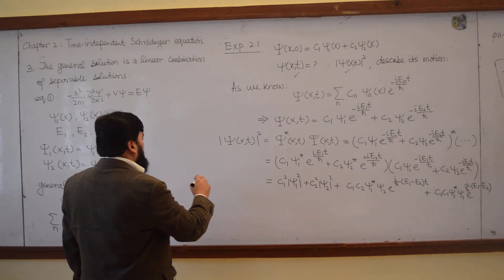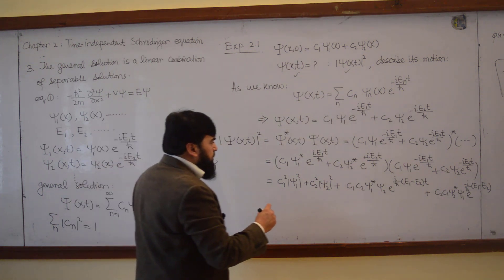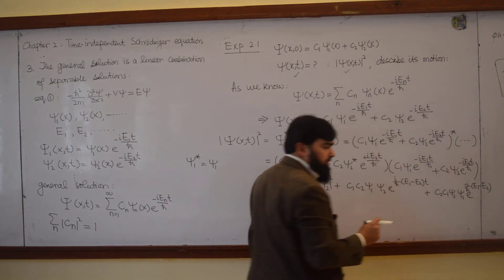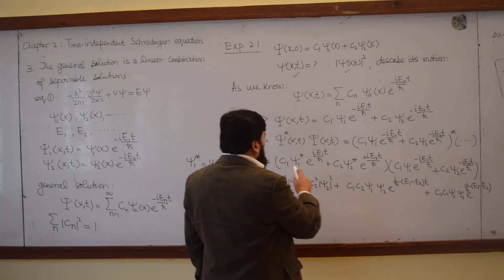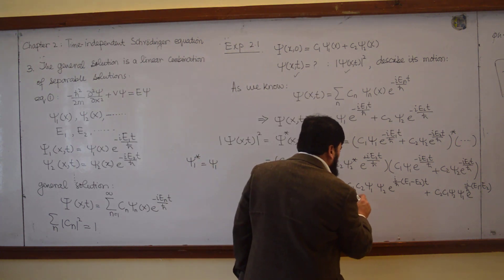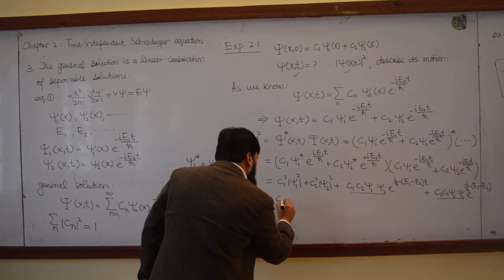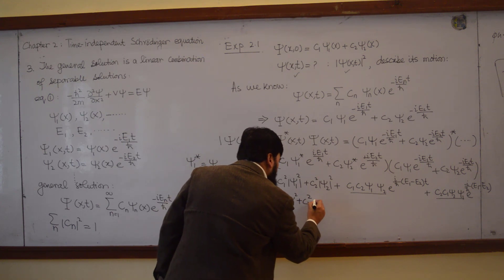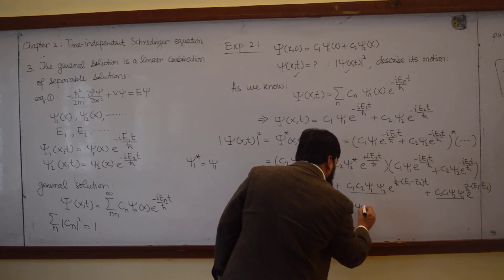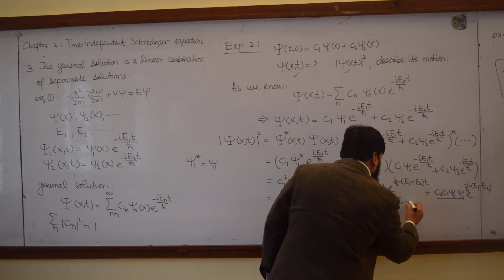Since Cn and ψn are real, conjugates are equal to the original functions. So the probability density becomes C1² ψ1² plus C2² ψ2² plus C1 C2 ψ1 ψ2 times [e^(i(E1−E2)t/ℏ) plus e^(−i(E1−E2)t/ℏ)].